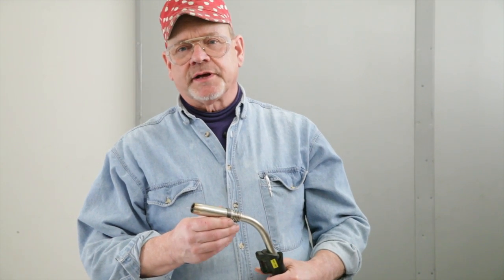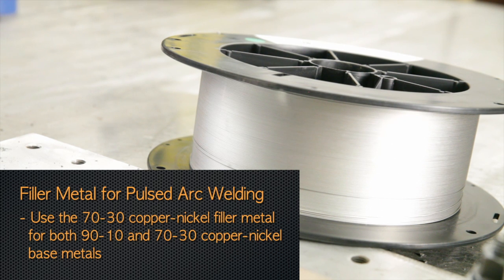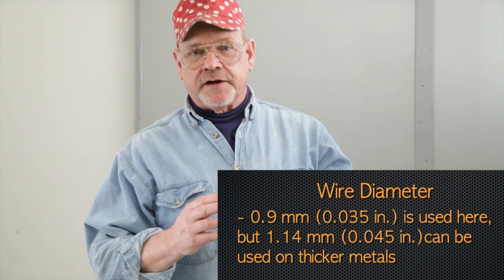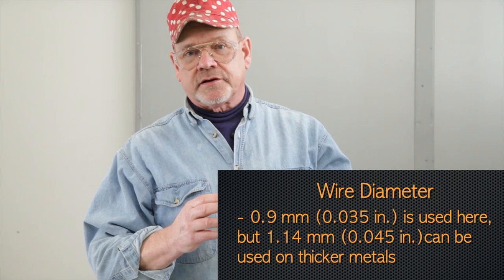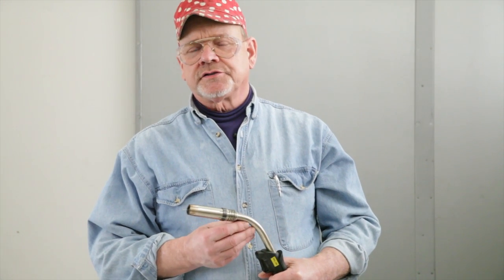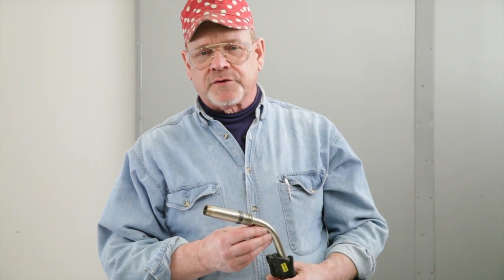In this segment, we'll do pulse gas metal arc welding with 70-30 copper nickel welding wire. In this case, we're using 35 thousandths of an inch diameter wire. There are other sizes available such as 45 thousandths of an inch and 1 sixteenth of an inch. The larger sizes are typically used on thicker materials where greater productivity is desired. For any of the MIG processes, an inert shielding gas is used. 100 percent argon may be used, but many prefer using argon-helium mixtures with the helium percentage ranging from 15 to 25 percent. In this case, we'll be using a 75 percent argon, 25 percent helium gas mix.